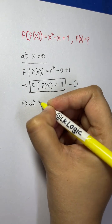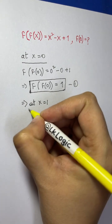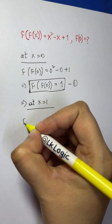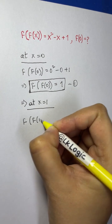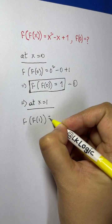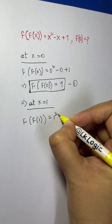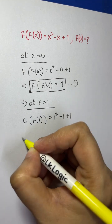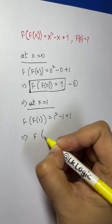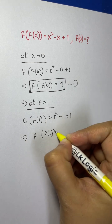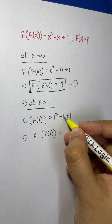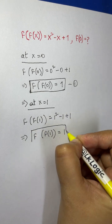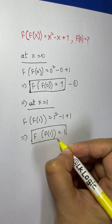At x = 1, let's substitute. f(f(1)) = 1² - 1 + 1, which gives f(f(1)) = 1 - 1 + 1 = 1. Let this be Equation 2.